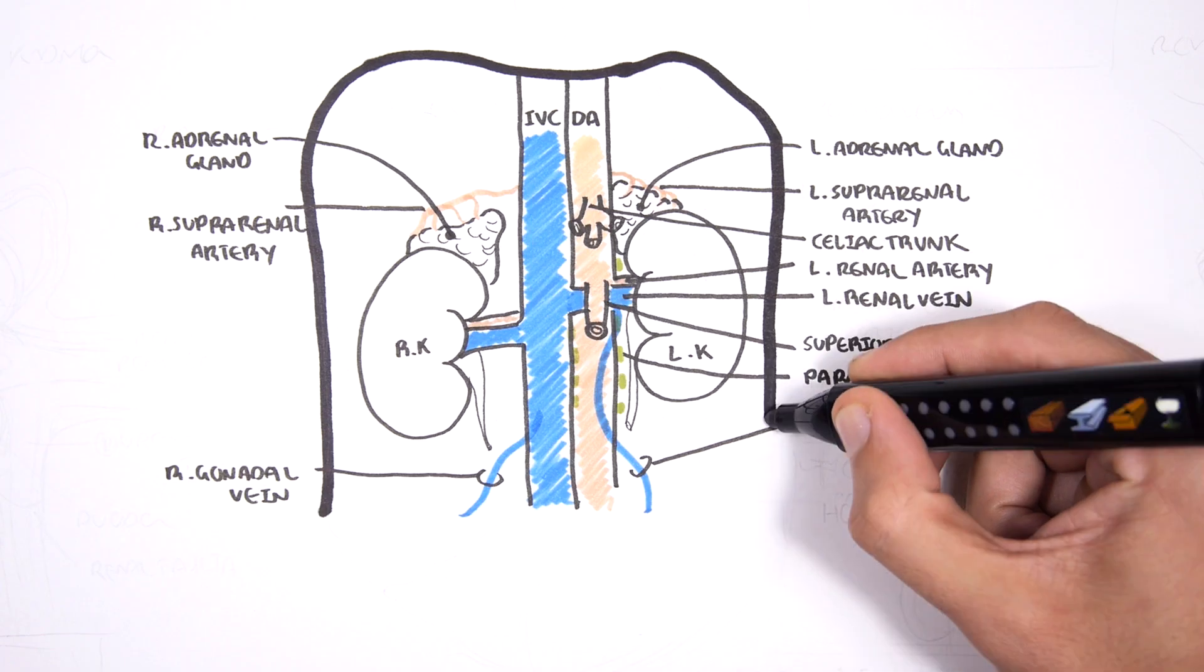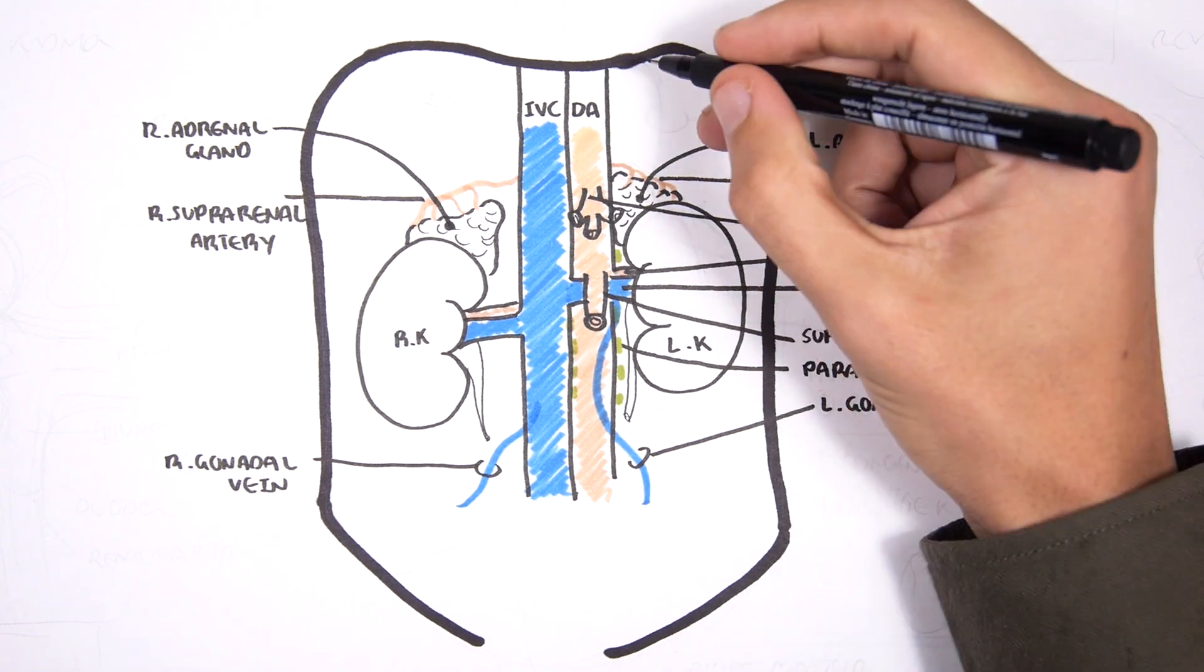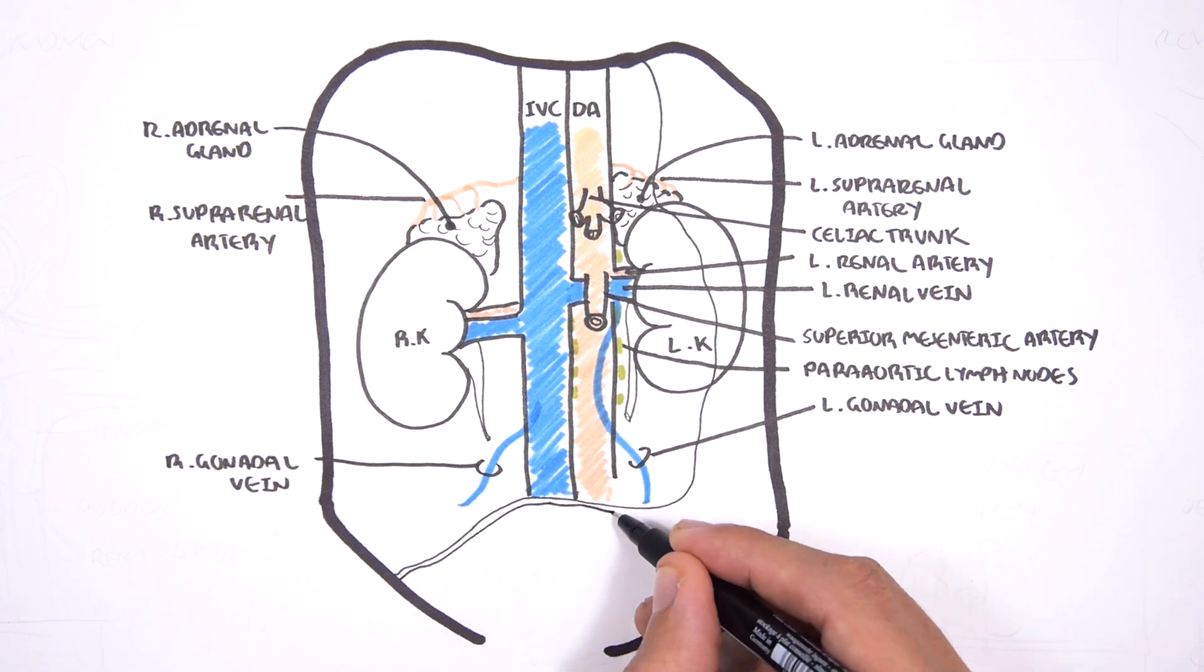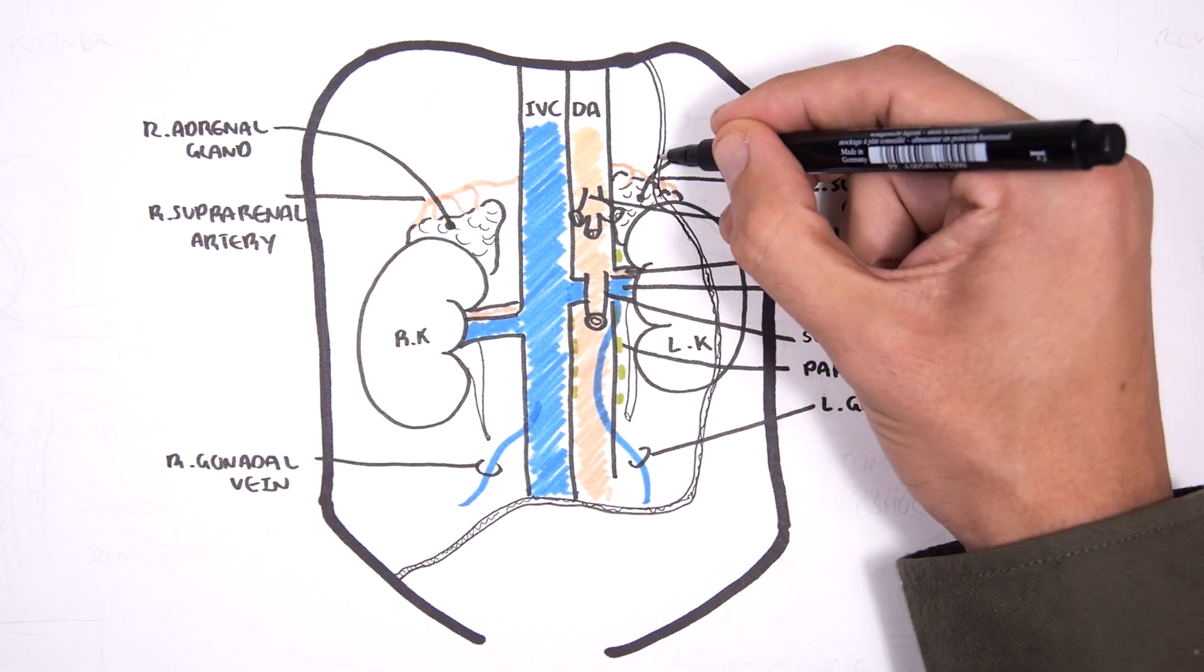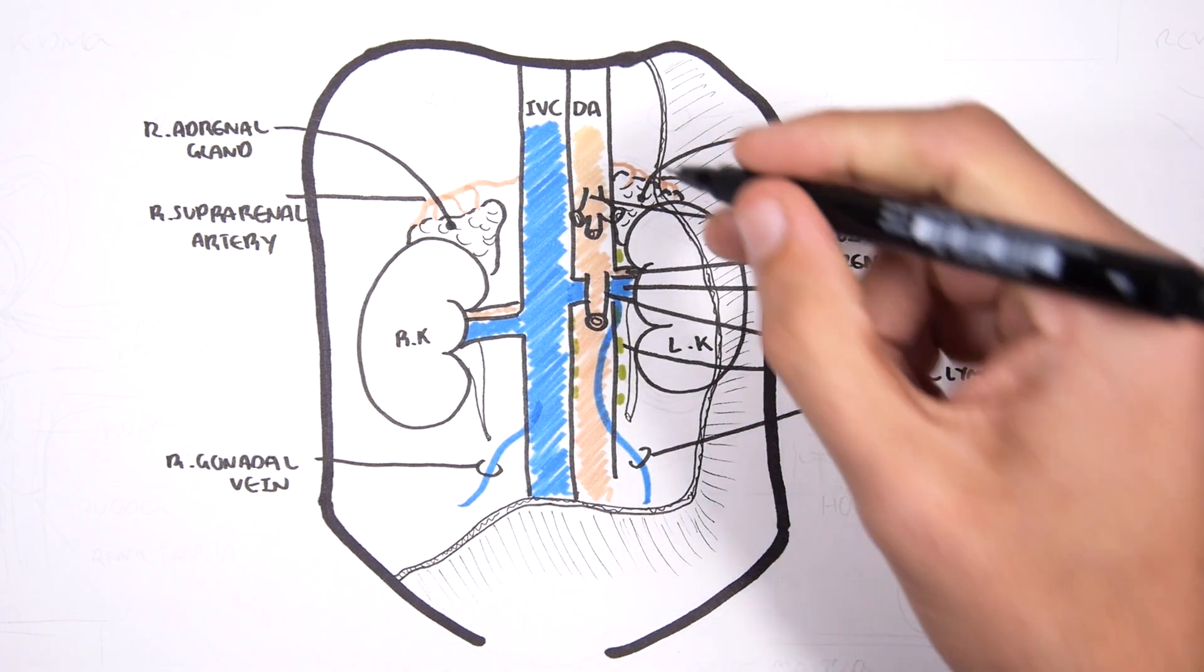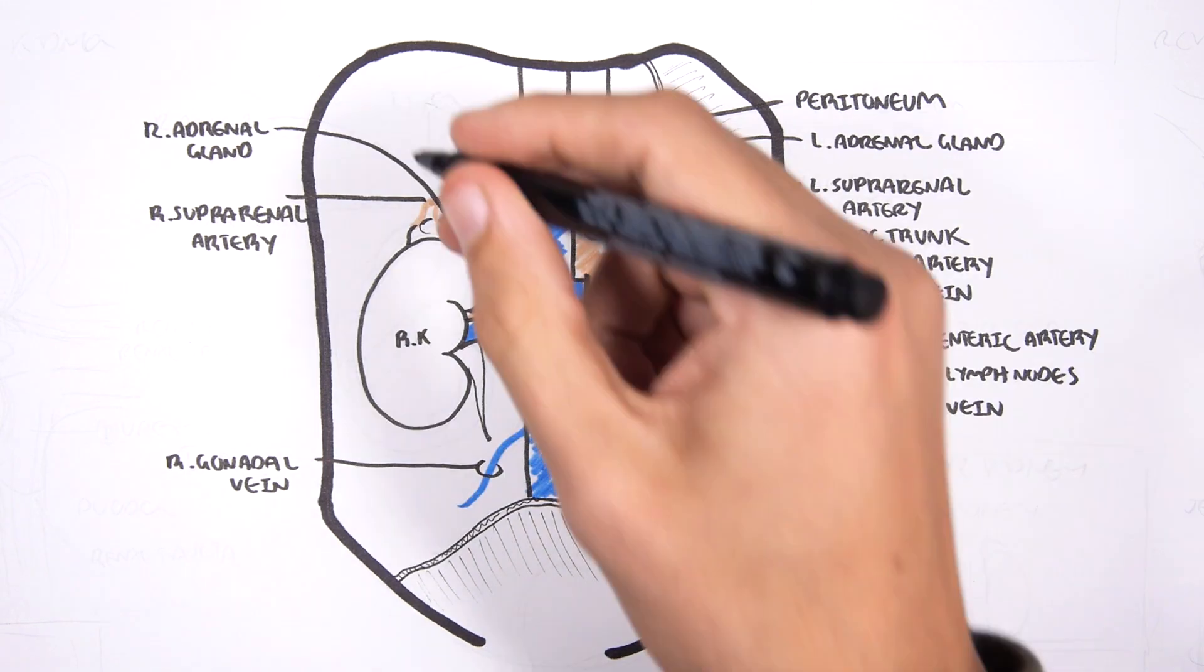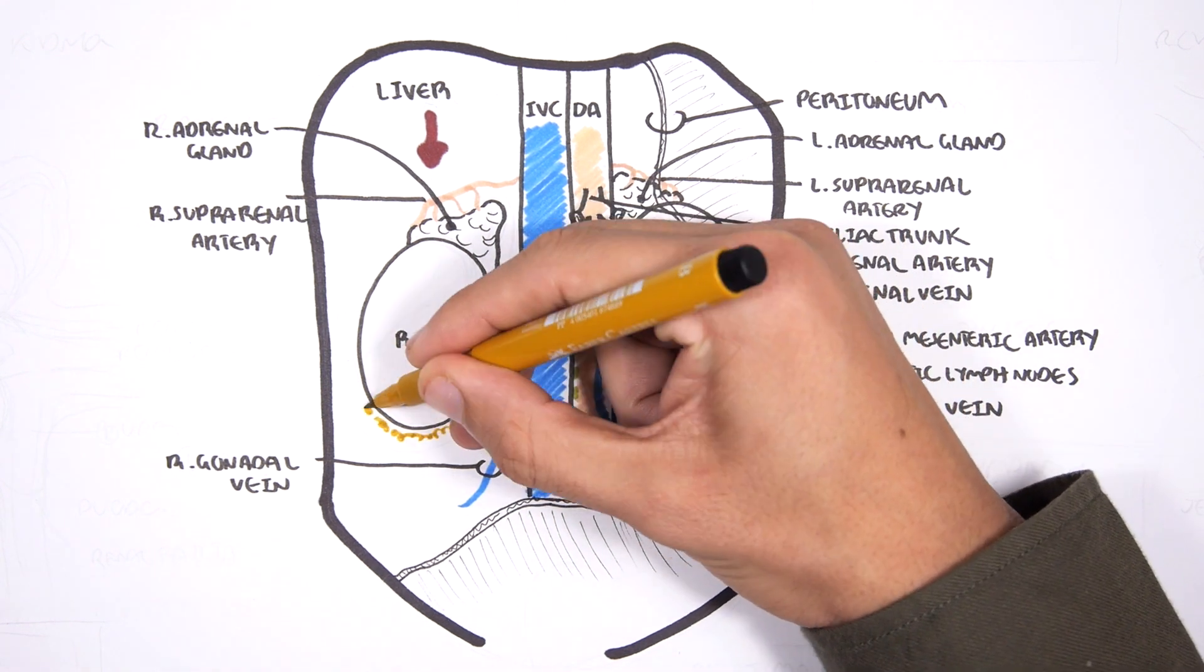Obviously your kidneys and all these structures I drew sit behind your abdominal cavity. They actually sit in the retroperitoneal cavity which means they sit behind the peritoneum. Here I'm drawing the peritoneum which is a membrane which surrounds your abdominal cavity. The liver sits in the right upper quadrant of your abdominal cavity and is one of the possible reasons why your right kidney sits actually lower than your left kidney.